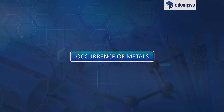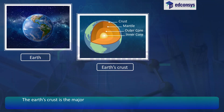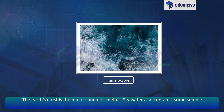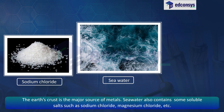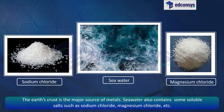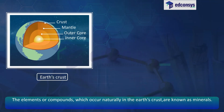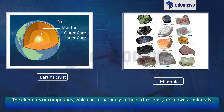Occurrence of Metals. The earth's crust is the major source of metals. Seawater also contains some soluble salts such as sodium chloride, magnesium chloride, etc. The elements or compounds which occur naturally in the earth's crust are known as minerals.